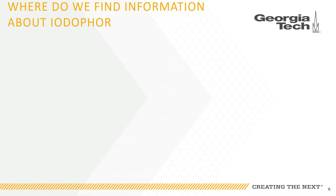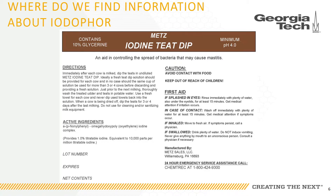Where should you look for more information about iodine or iodophor? You can start by reading the label on the container used to store the undiluted form of the chemical. For iodophor, this may be a drum or even a small plastic container. You can also ask to read the safety data sheet for the chemical being used. This slide shows a picture of what the label looks like for iodine teat dip, which is used to treat cows before and after milking. From this label, you can see it lists how to use the product, what precautions should be taken, and what to do in the event that you become exposed to the chemical. However, this label provides very little information about the health effects of exposure to iodine. To answer this question, we have to look for more information.